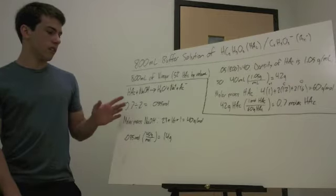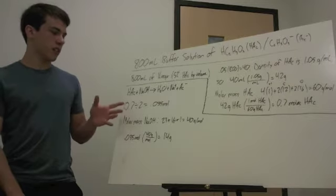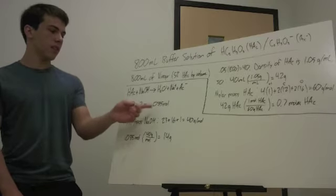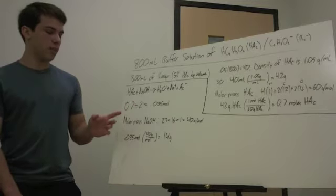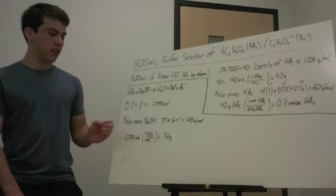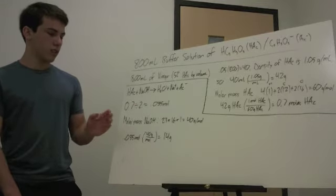So, we take the moles of our acid that we have currently, and we divide it by 2 to get 0.35 moles, and that's how much conjugate base we want to have for the buffer solution.